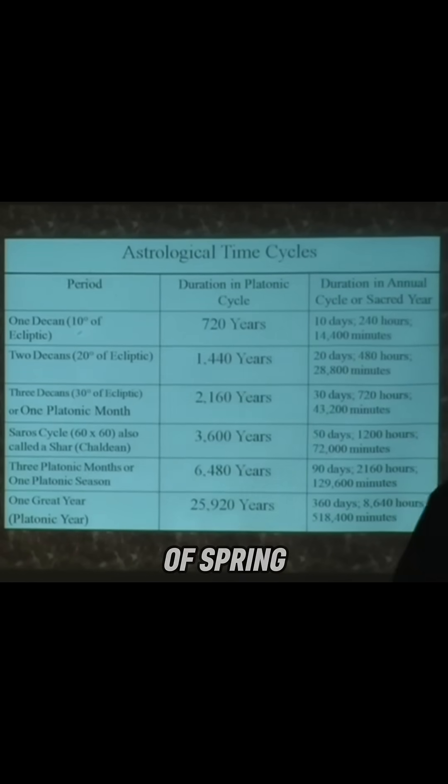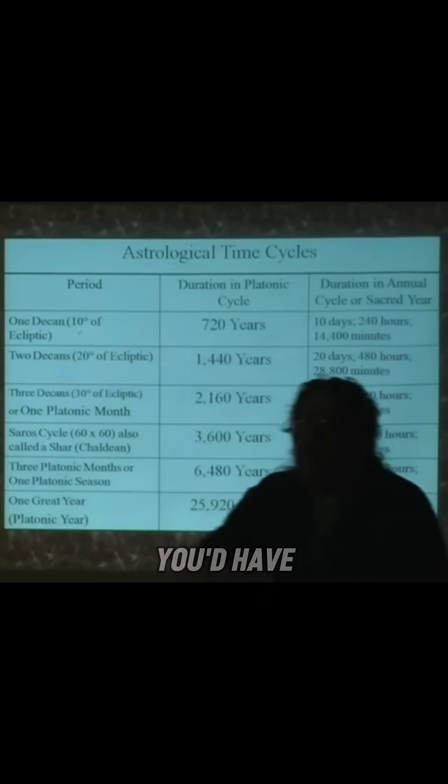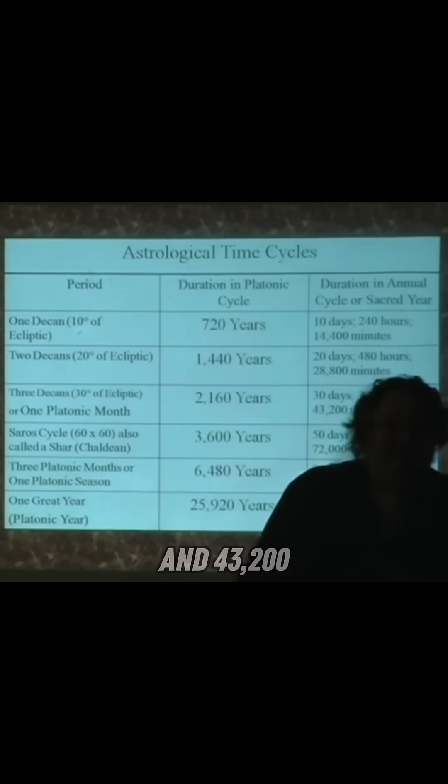Remember I said at the moment of spring equinox, if you're on the right position on the earth, you'd have exactly 43,200 seconds of light on one side and 43,200 seconds of dark on the other side.